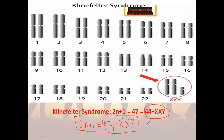First question: is the Klinefelter syndrome abnormality an autosomal or a gonosomal abnormality? Justify your answer. It is a gonosomal abnormality since it affects the sex chromosomes — XXY — the gonosomes.